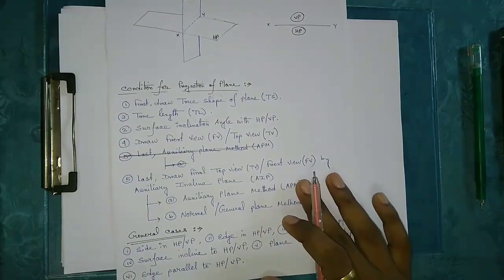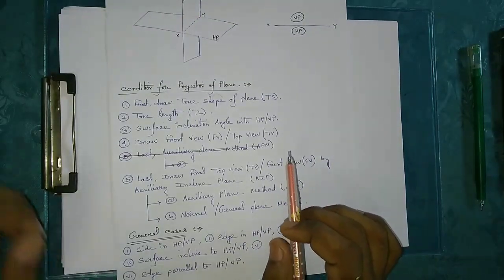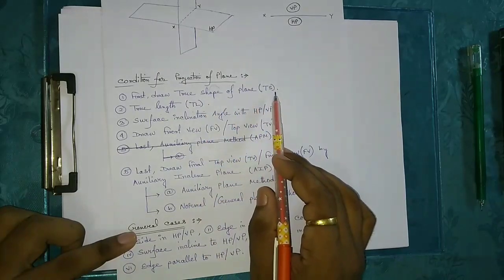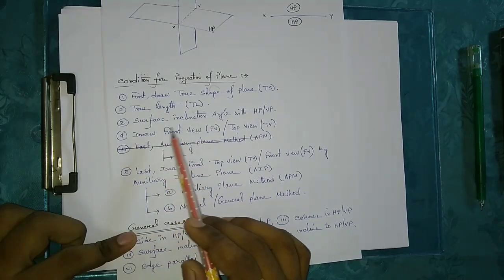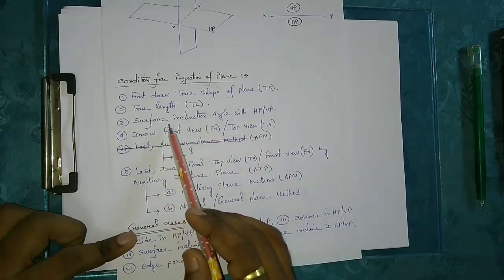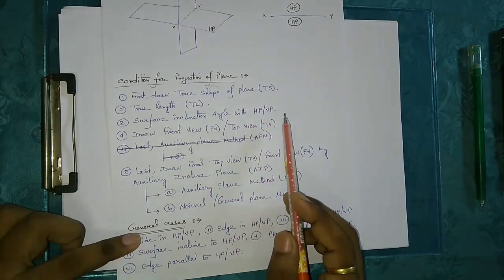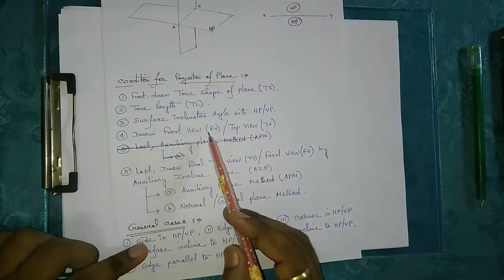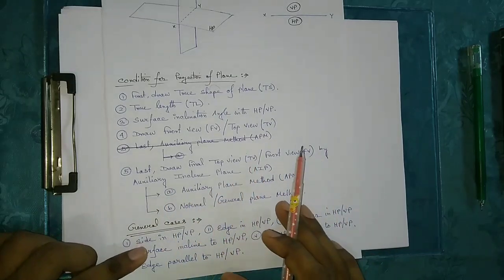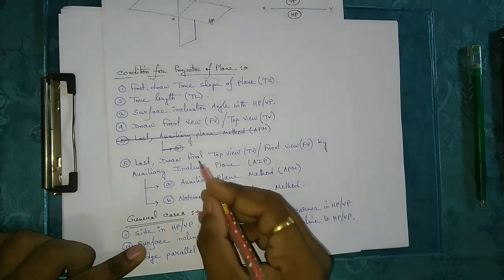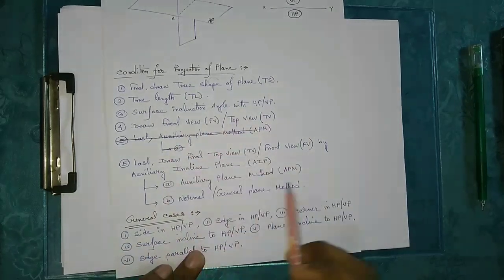Now, the conditions for Projection of Plane. First, we have to draw the true shape of the plane. Next, we have to find the true length TL. Third, we determine the surface inclination angle with HP or VP, and the plane inclination angle with HP or VP. Then we draw the front view or top view, and the last step is the final draw of the top view or front view using the auxiliary inclined plane method, which has two types: auxiliary plane method or normal general plane method.